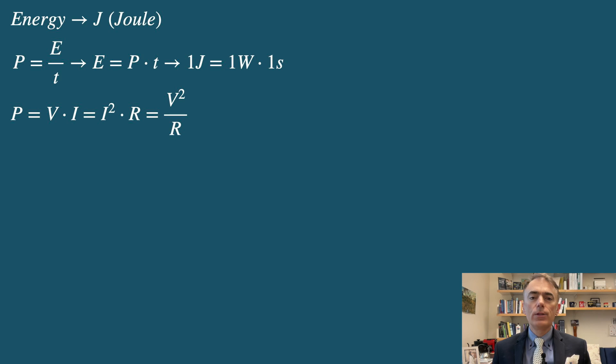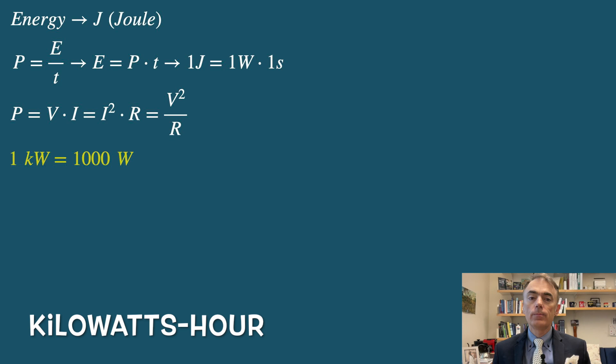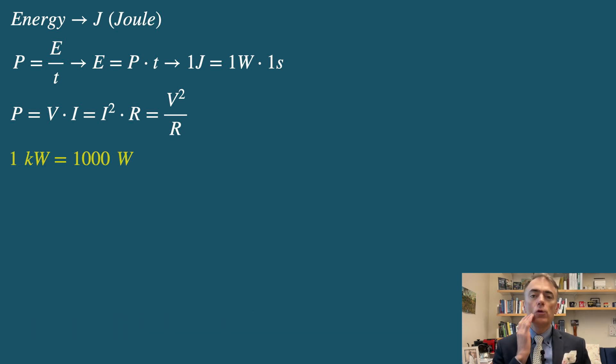While the joule is the standard unit of energy, in practical contexts, especially in households and industries, electric energy is often measured in kilowatt hours. One kilowatt hour is the amount of energy used by a 1 kilowatt, 1000 watt, device running for an hour. One kilowatt hour is 1000 watts times 3600 seconds, which is 3.6 million joules.